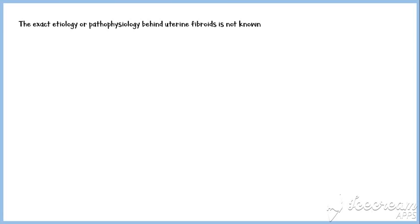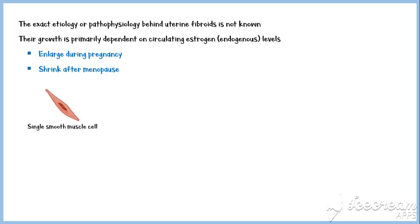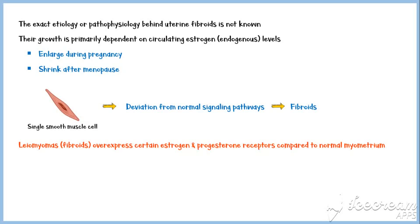The exact etiology or pathophysiology behind uterine fibroids is not known. However, their growth is primarily dependent on circulating estrogen levels, and more precisely, endogenous estrogen. Therefore, they can enlarge during pregnancy in response to high estrogen levels, and shrink after menopause due to the lack of estrogen. Research suggests that fibroids start from a single smooth muscle cell, followed by deviation from normal signaling pathways. Leiomyomas also overexpress certain estrogen and progesterone receptors compared to the normal surrounding myometrium.